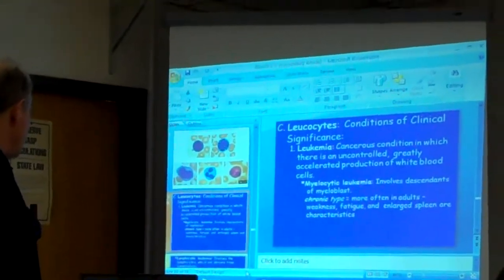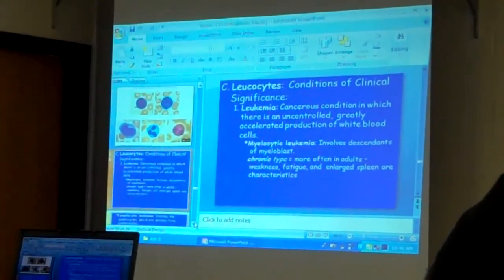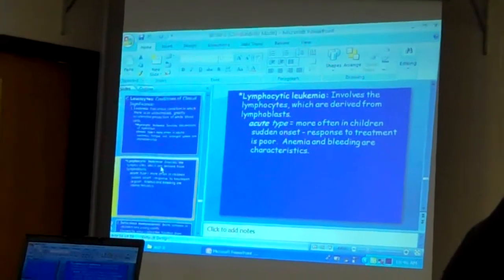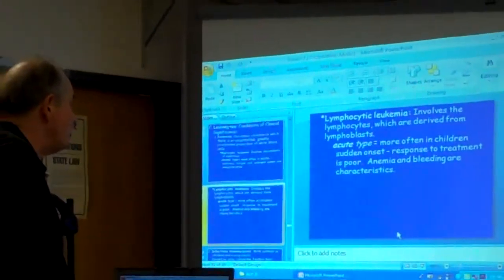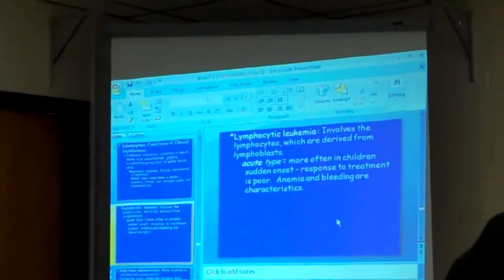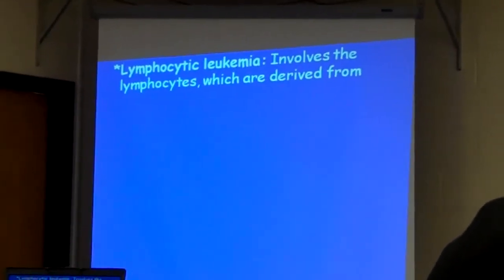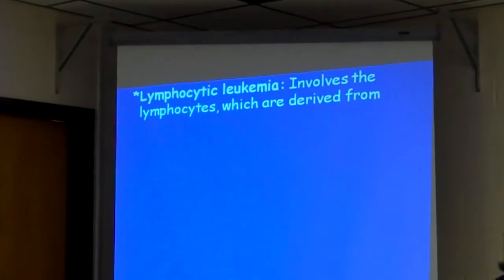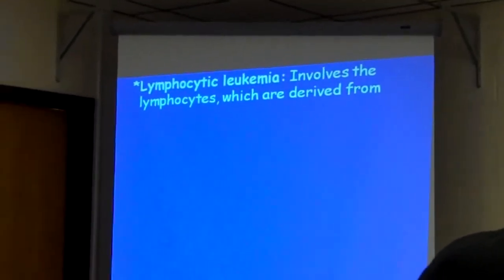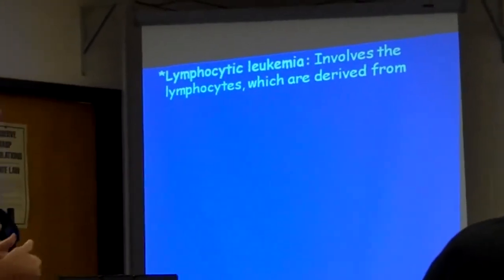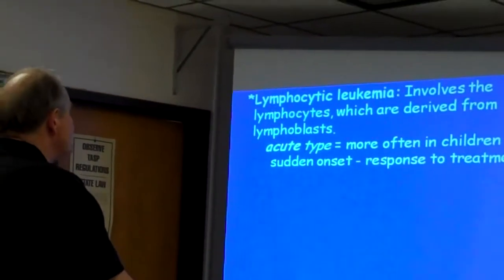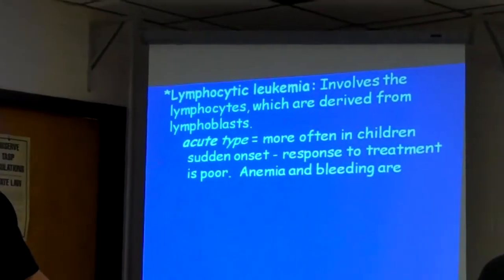And then the lymphocytic — so we have leukemias there, the myelocytic, and then lymphocytic leukemia involves lymphocytes, which are derived from lymphoblasts. Acute, more often in children. Anemia and bleeding. I think in some situations they can arrest this leukemia somewhat with children — they're having some luck with kids with leukemia to a certain degree. Acute, sudden onset, response to treatment is poor, anemia and bleeding.